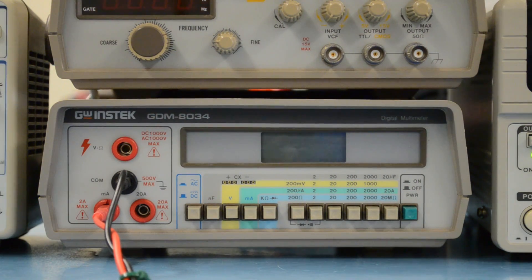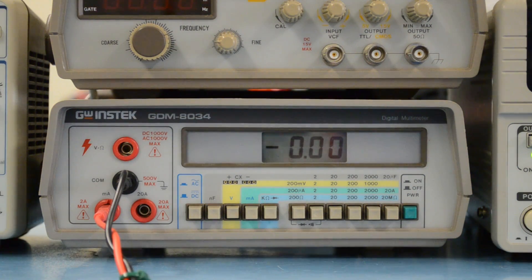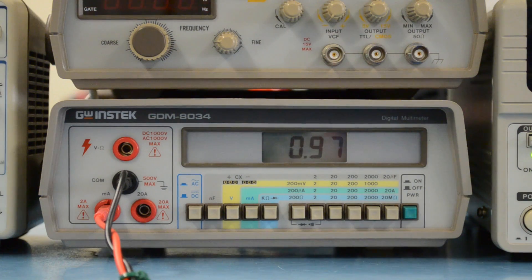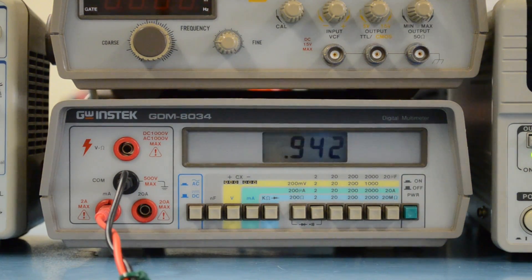Now we're going to turn on the multimeter, set it to milliamps for current, and adjust the scale appropriately. As shown here, we have about 0.9 milliamps flowing through this circuit.